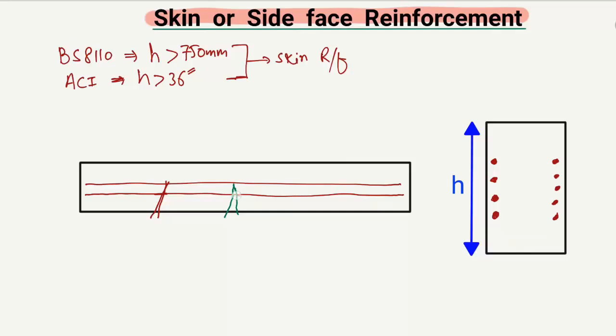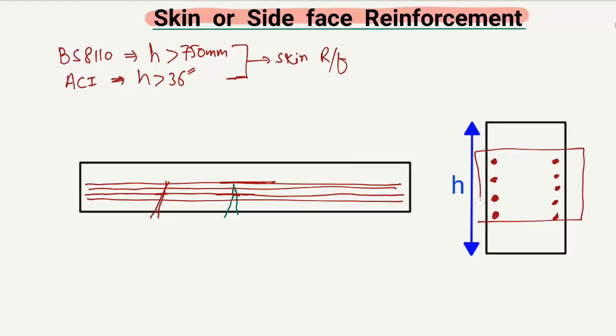We provide reinforcement in the side face of the beam to avoid the higher width of cracks along the depth of the beam. We provide the skin reinforcement in the longitudinal direction. In the cross section it looks like this — this is the side face of the beam.